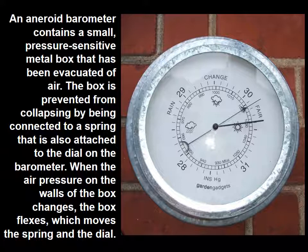And so you can see on the left here, you can follow along, an aneroid barometer contains a small pressure sensitive metal box that has been evacuated of air. The box is prevented from collapsing by being connected to a spring that is also attached to the dial on the barometer. When the air pressure on the walls of the box changes, the box flexes, which moves the spring and the dial. So that's not a mercury barometer, but it is an aneroid barometer, which also measures air pressure.